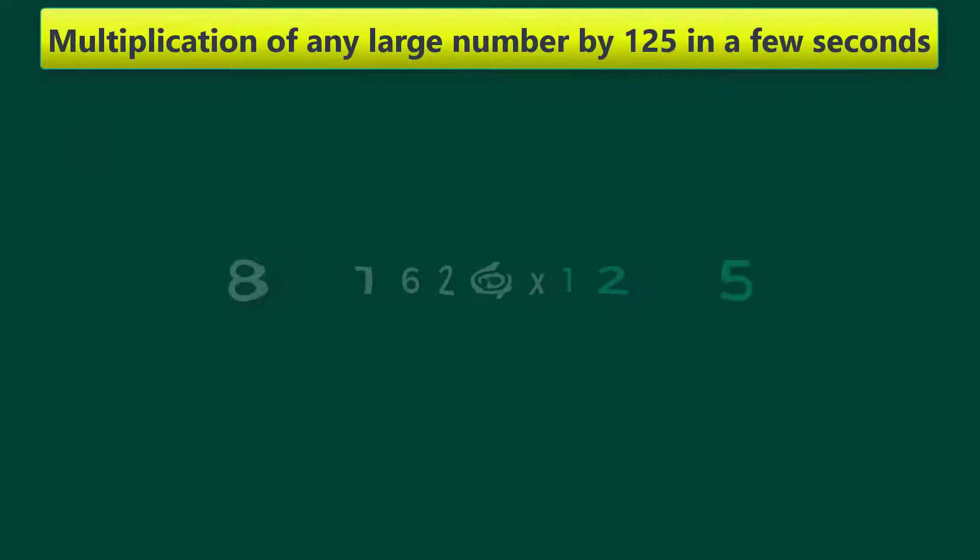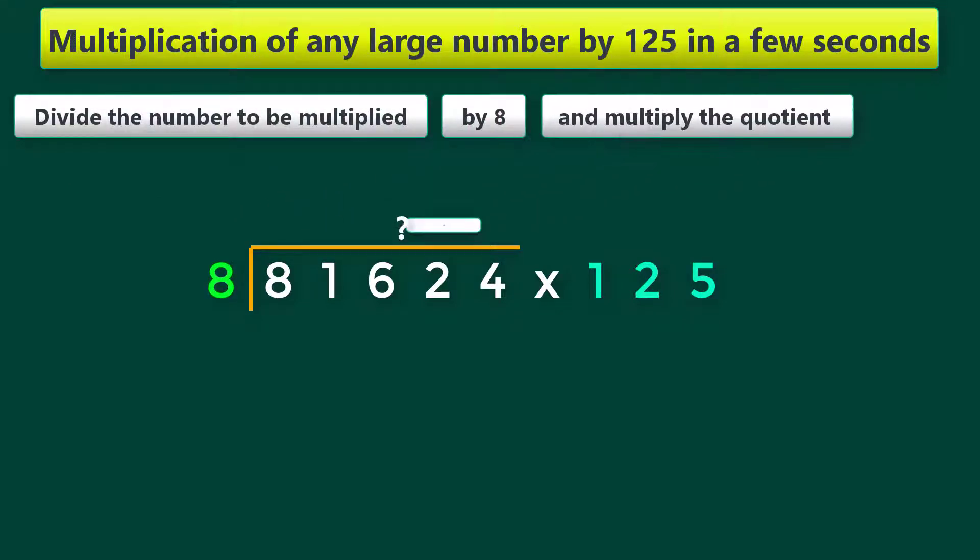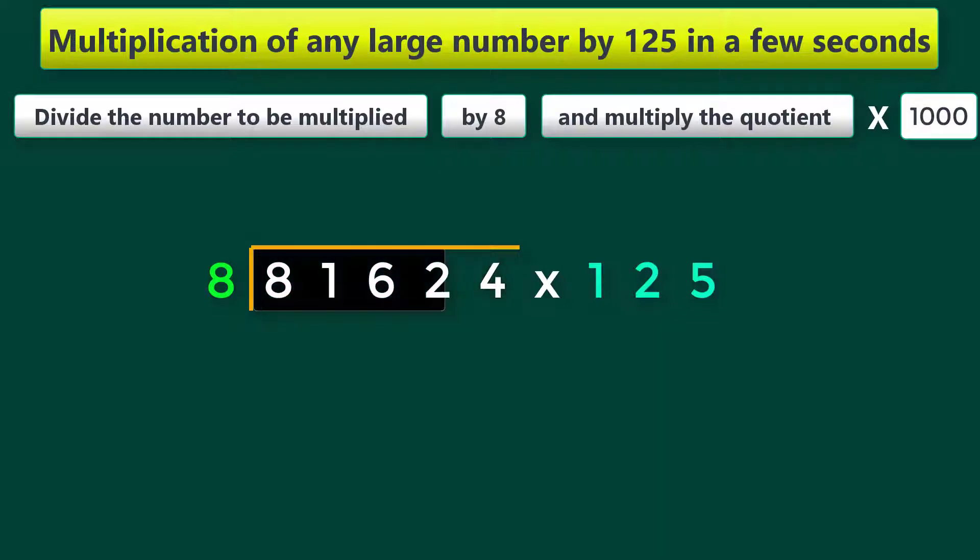Okay, let us multiply the number 81,624 by 125. To get a quick answer, divide the number to be multiplied by 8 and multiply the quotient by 1000. So let us first divide the number by 8.